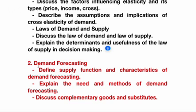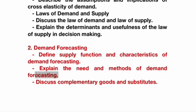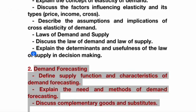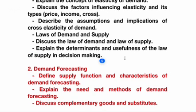Question 5A/B covers demand forecasting: define the supply function, characteristics of demand forecasting, explain the need and methods of demand forecasting, as well as complementary goods and substitutes. This is set as the 5A/B question and the fourth question in the paper. I will work out for you a pre-final examination question paper — if you comment requesting it, I will prepare a sample paper for 60 marks and upload it a day or two before the exam, so you can check your level of preparedness for the end examination following the Jagannadha-to-H pattern.